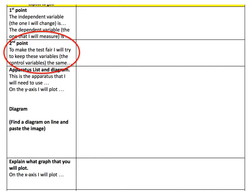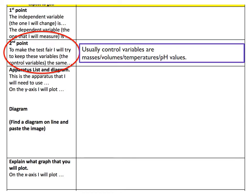The second point is how you're going to make the test fair — what variables are you going to keep the same? What are the control variables? This is quite tricky with the food tests, but a hint: control variables are usually either masses, volumes, temperatures, or pH values. Do any of those match to food tests, and can you control them to keep the tests fair?